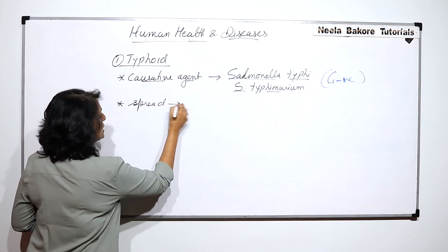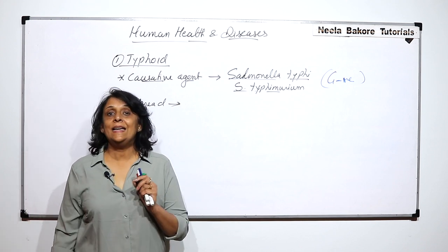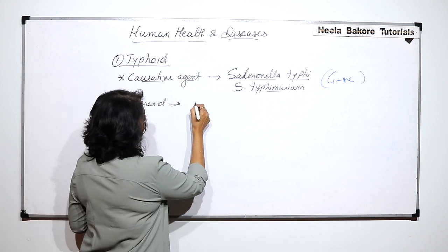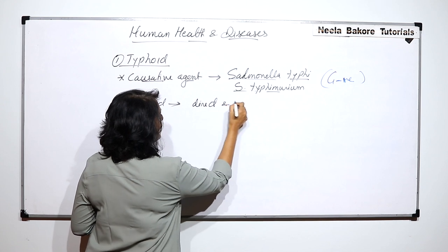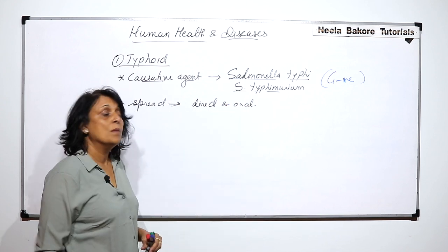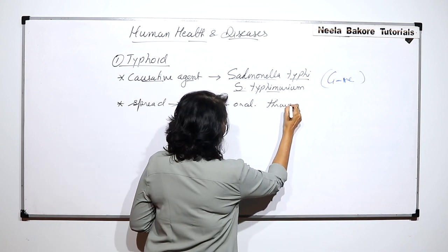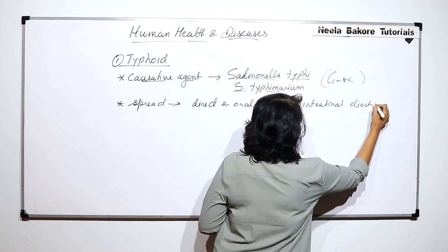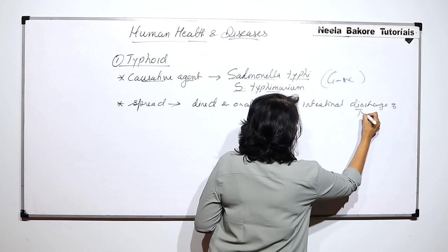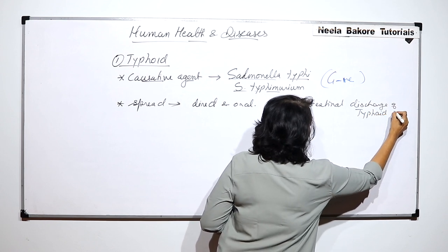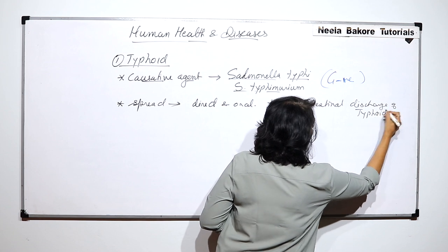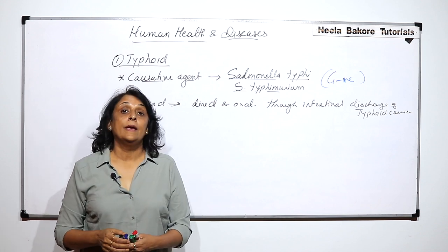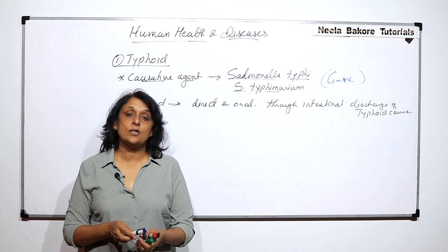It spreads through the intestinal discharge of typhoid carriers. It is called direct and oral spread. So if an individual is a typhoid carrier, then through its intestinal discharge it is going to spread.